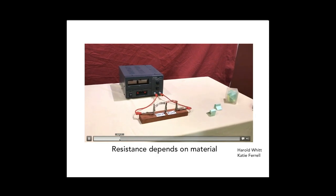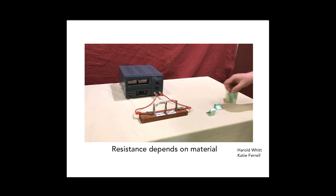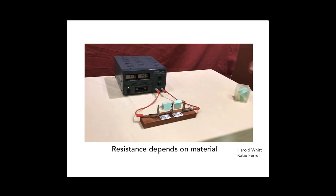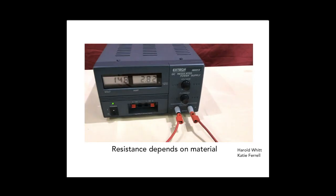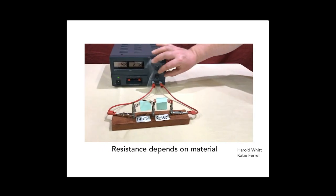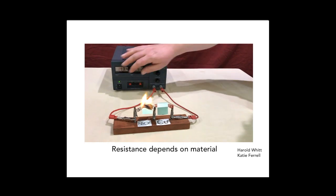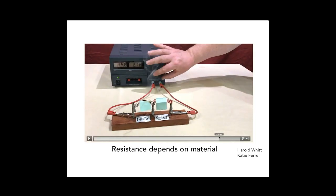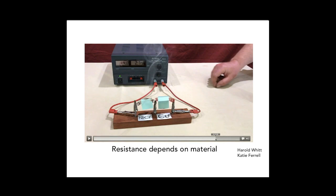Here is a circuit with two wires. They have the same length and the same diameter but are made of different materials — one is nickel chromium and the other is copper. I'm passing the same current through both wires. After a while, one of the wires gets much hotter and starts burning. So if you want to make a toaster, you want to use the wire with the larger resistance. But if you want current to be flowing like a transmission line, you want to use the one with lower resistance. That's how we can see that resistance depends on the material.